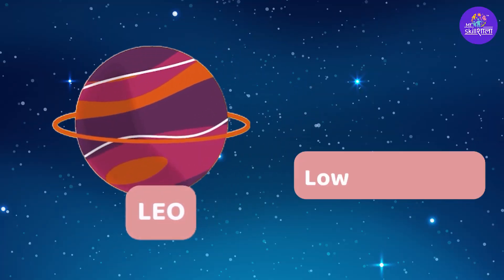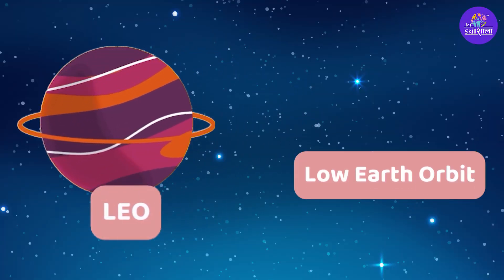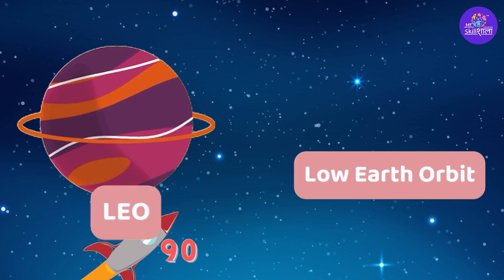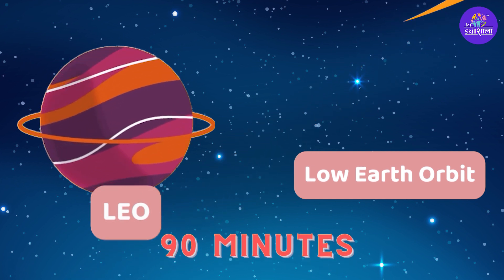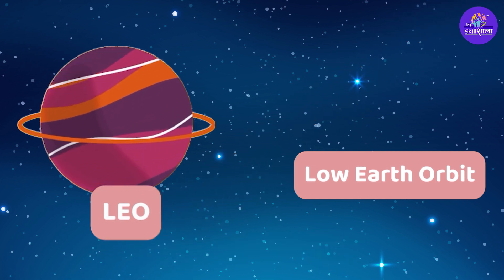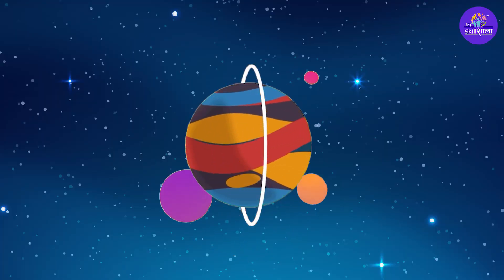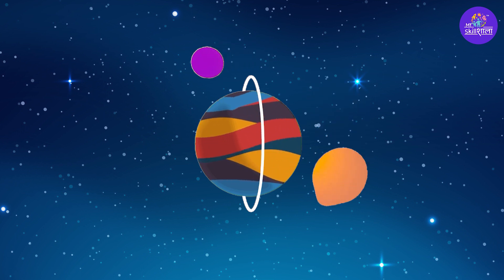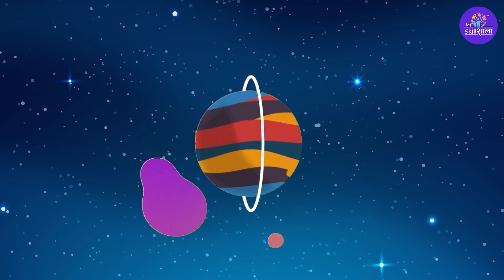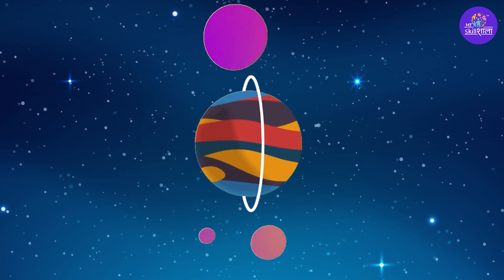When you launch it into LEO, or the low Earth orbit, it takes around 90 minutes to orbit around the Earth. But here, it faces atmospheric resistance of the Earth, which will cause it to decay. But if you go a little further than that, it comes out of Earth's atmosphere and the decay stops.